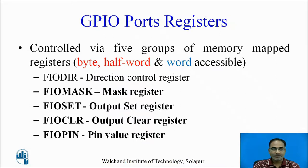GPIO port pins are controlled through five groups of memory map registers. In the previous session we learned how to set the direction of any GPIO port pin for input or output. Now in this session we will learn the remaining registers: FastIO mask register, FastIO set register, FastIO clear register, and FastIO pin value register.